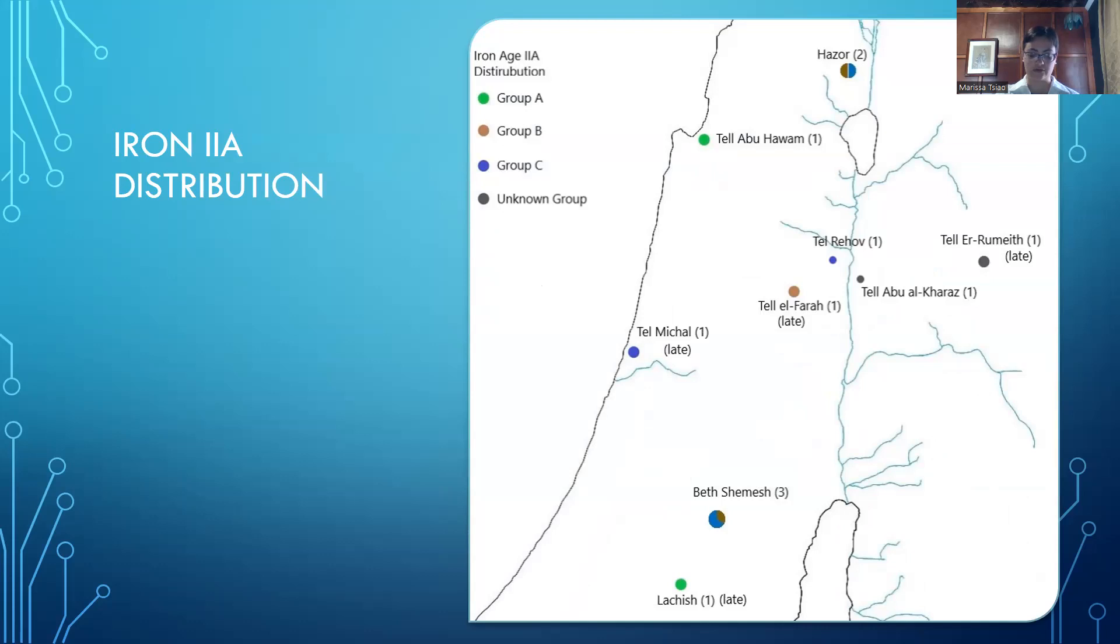Another fibulae was found at stratum III at Tel Abu Hawam, dated to the late Iron IIA, and additional contexts dating to this period feature fibulae for the first time. Single items were found at Tel Hazor stratum 8B, Tel Michal stratum 13, and Lachish level IV, while three items were found at Tel Bet-Shemesh in tomb I.